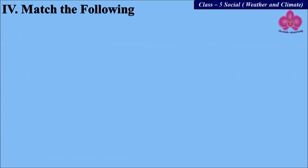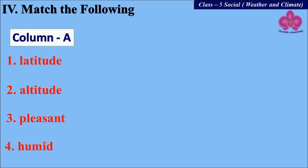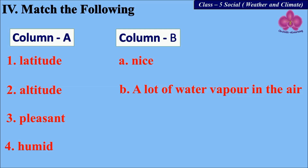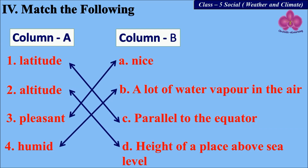Next question: match the following. Column A has: latitude, altitude, pleasant, and humid. Column B has: nice; a lot of water vapor in the air; parallel to the equator; height of a place above the sea level. The answers are: latitude — parallel to the equator; altitude — height of a place above the sea level; pleasant — nice; humid — a lot of water vapor in the air.